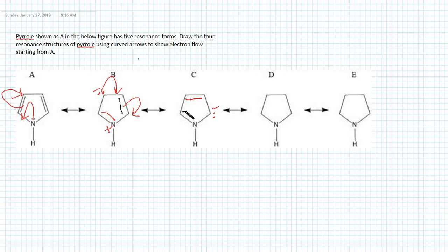Using C we should be able to go to D, again using the same strategy: use lone pair electrons here to make a pi bond, use the pi bond to make lone pairs. This will be a lone pair here, this will be a pi bond, and this should stay as a pi bond.